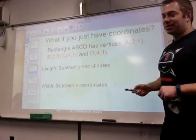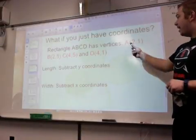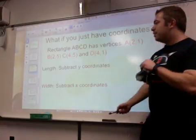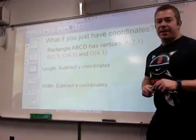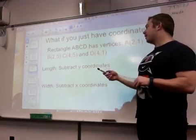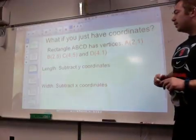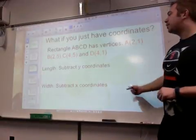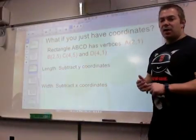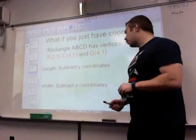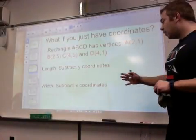A is 2, 1. We're not playing battleship. A is a 2 and 1. B is a 2, 5. C is 4 for X, 5 for Y. And D is 4 for X and 1 for Y. So the rule of thumb here is you could subtract the Y coordinates to find the length going up and down, and you could subtract the X coordinates to find the width going left to right.